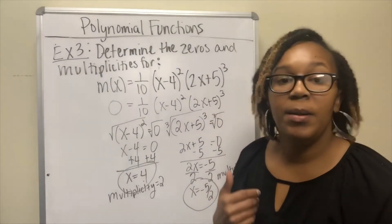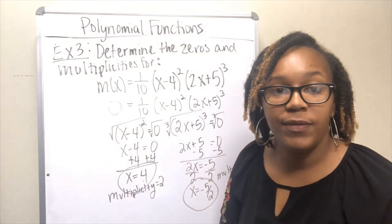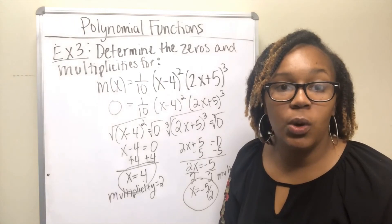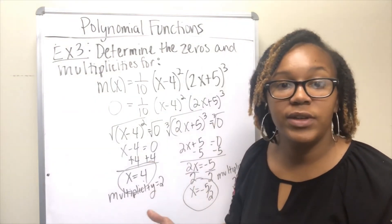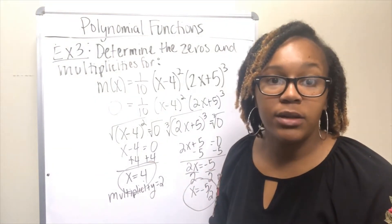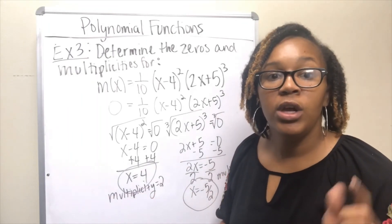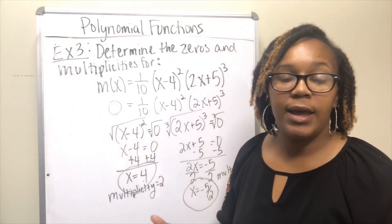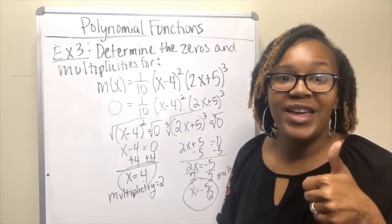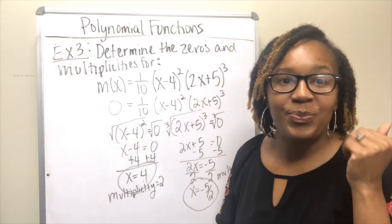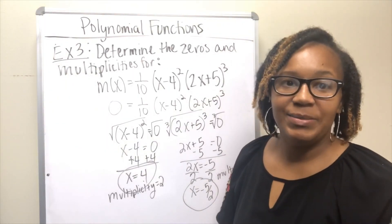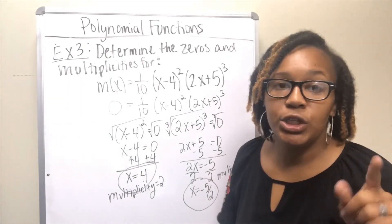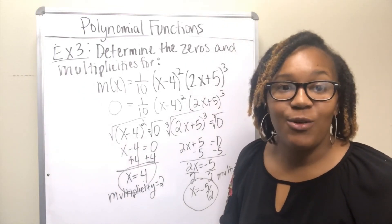That's how you find end behavior and zeros for polynomial functions. I recommend watching the next video on graphing polynomial functions. If you have any questions, leave them in the comments below. If this helped you, hit the like button, and make sure you subscribe. See you in the next video.